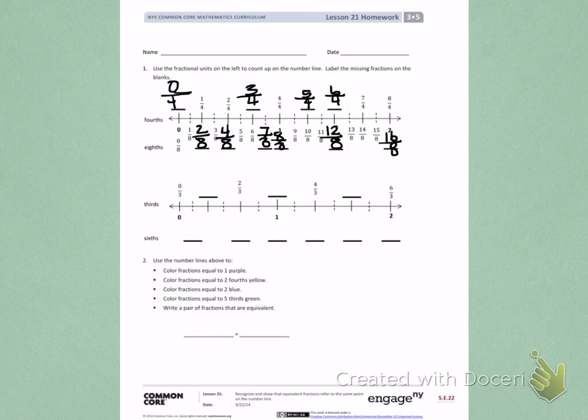On my second number line, I have thirds, and I'm going to count the solid lines to label my thirds. So, I have 0 thirds, 1 third, 2 thirds, 3 thirds, 4 thirds, 5 thirds, 6 thirds.